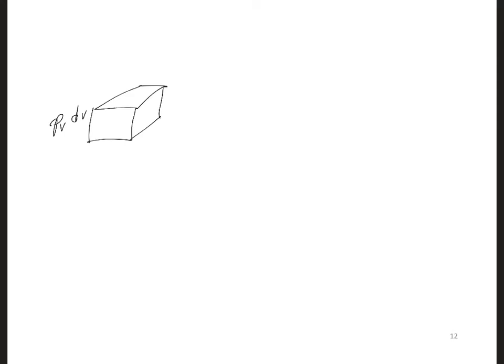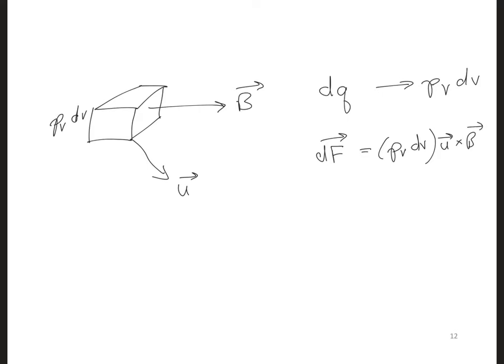So let's say that this volume of charge is moving here in the u direction, and there's a background magnetic field that is to the right. It's going to feel collectively a Lorentz force. And so we have dq for a single charge in the Lorentz force equation becomes rho v dv. So plugging this in, we get df is equal to rho v dv times u crossed with b, which becomes rho v u crossed with b dv.